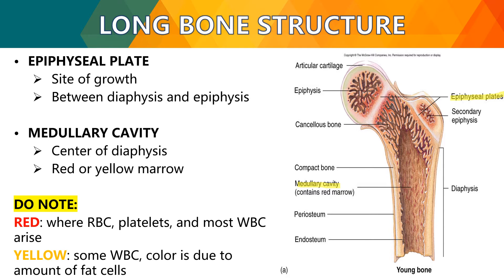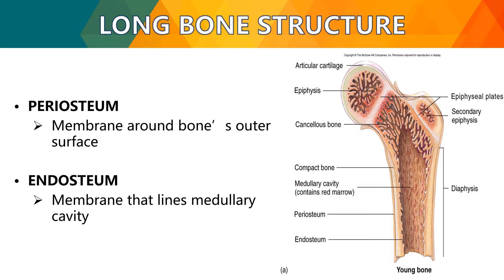Red marrow is the location of blood-forming cells like red blood cells, platelets, and white blood cells. Yellow marrow is where some WBCs arise, and its color is due to the amount of fat cells present. In newborns, most bones have blood-making red bone marrow, but in adults, red marrow in the diaphysis is replaced by yellow bone marrow. Most red marrow is found in flat bones and the long bones of the femur and humerus. The periosteum is the membrane around the bone's outer surface, and the endosteum lines the medullary cavity.